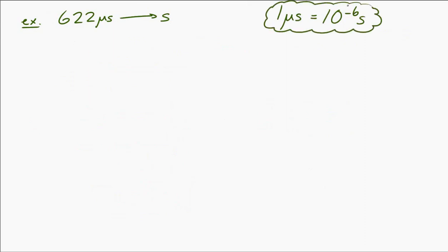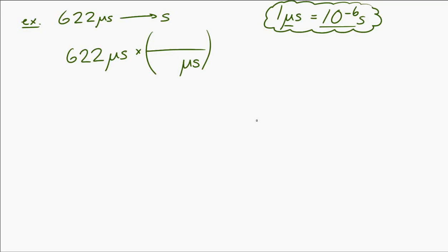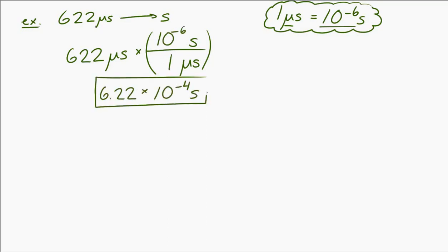One microsecond is 10⁻⁶ seconds — micro means 10 to the minus 6. To get microseconds to cancel out, I put microseconds in the bottom of my conversion factor and seconds on top. One microsecond is 10⁻⁶ seconds, and working that out gives 6.22 times 10⁻⁴ seconds.